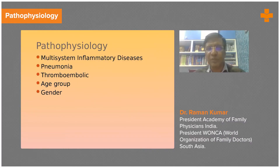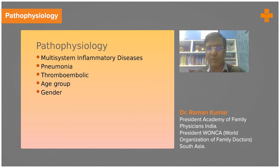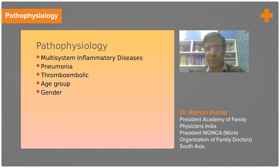Pathophysiology is important. Initially the idea was that COVID is an infective pneumonia, but the understanding now is that it is a multi-system inflammatory disease that impacts almost the whole body. Most importantly it affects the lungs, but may also impact the cardiovascular system, and generally causes malaise, musculoskeletal pain, headache, and lightheadedness.